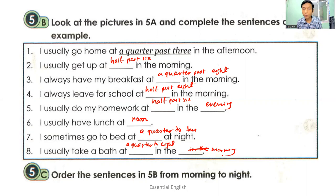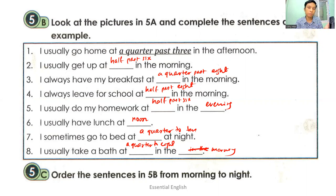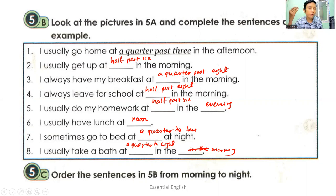Now you've completed the sentences. When you read them, you will notice they are not in the correct order. So you need to order the sentences in 5B from morning to night. According to the timeline, you have to rearrange the sentences.